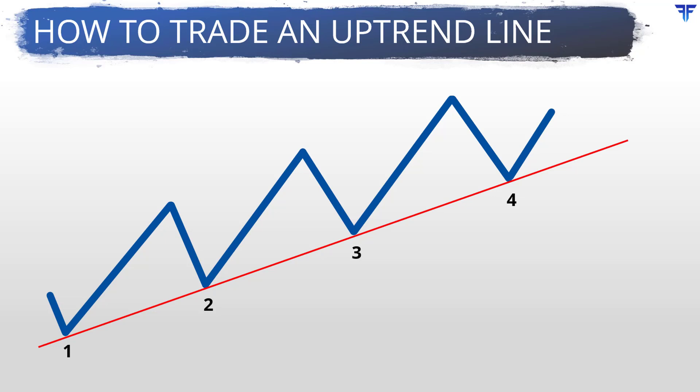But what happens when an uptrendline is broken? A break of an uptrendline gives an early warning that the prevailing uptrend could be changing. In this chart, such a warning came at point 5 when price broke below the uptrendline — a sign that the prevailing uptrendline has weakened and could be about to change. Later, the price went on to break the previous low of point 4, signaling a reversal in trend from up to down. Notice that the breach of the uptrendline gave an early warning about the trend change prior to the actual reversal in price.